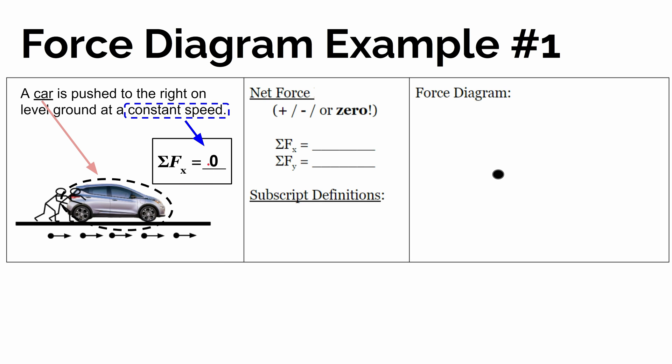So let's write in here that the sum of the forces in the x direction — the direction of motion — must be zero. In the x direction, when we add up the forces, the sum of the forces in the x direction must be zero.